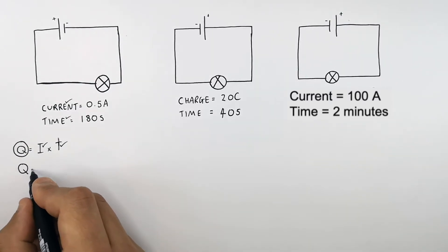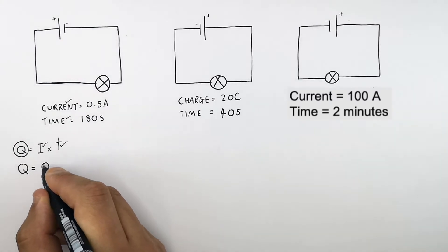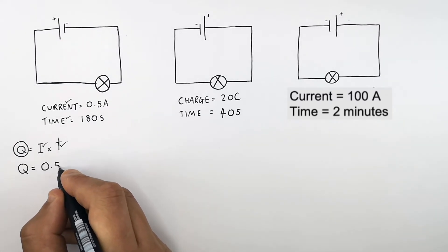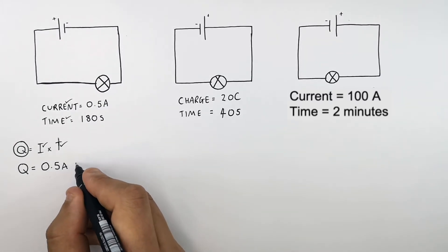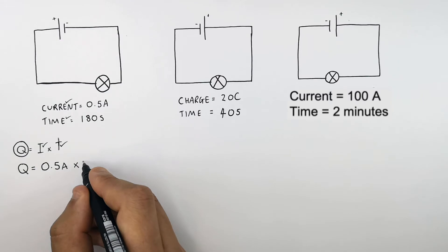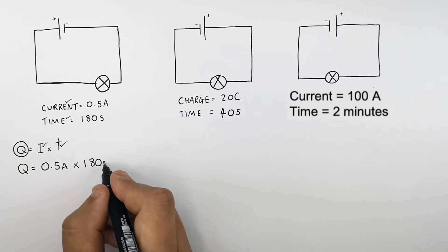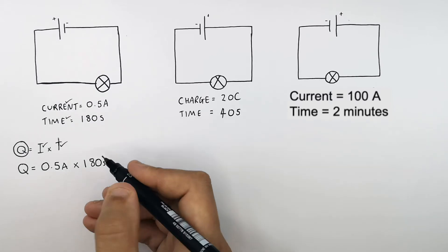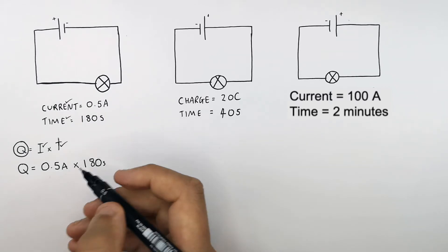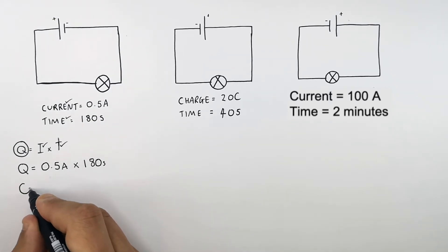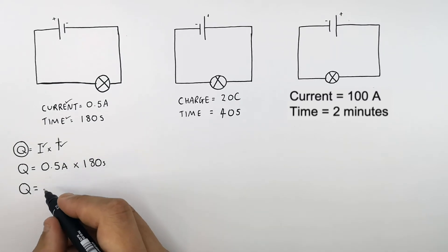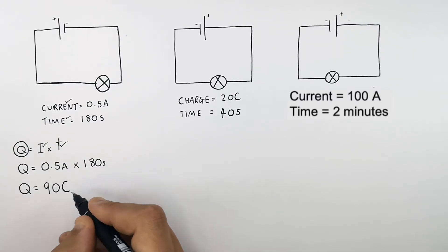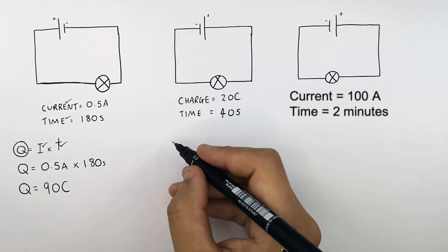So Q equals the current I, which is 0.5 amps, times by the time the circuit is on for, which is 180 seconds. So 0.5 amps times 180 seconds gives you a charge of 90 coulombs flowing through the circuit.